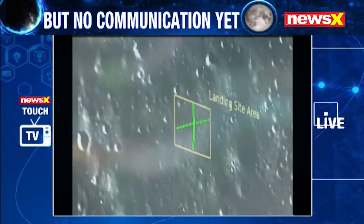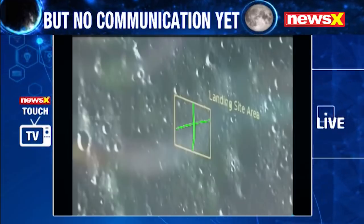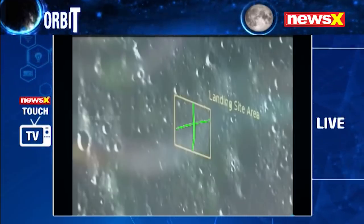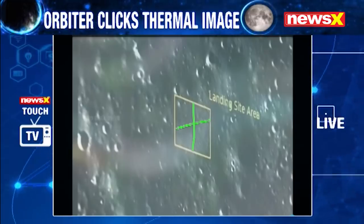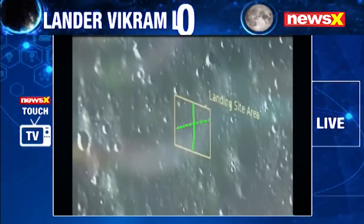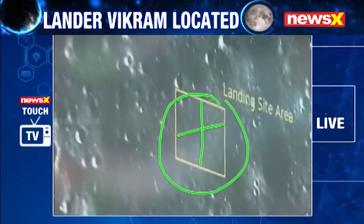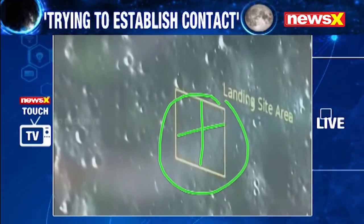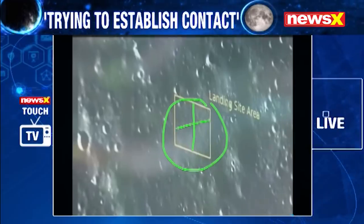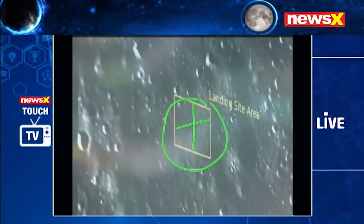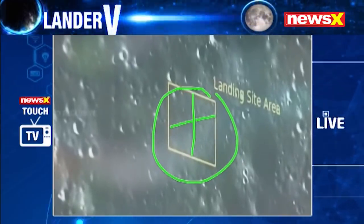If Vikram crash-landed from the height of two kilometers — from where we lost contact — this would be roughly the total area where the lander could be found. As of now, ISRO chief K. Sivan just informed that there has been no contact, but a thermal image has been found.